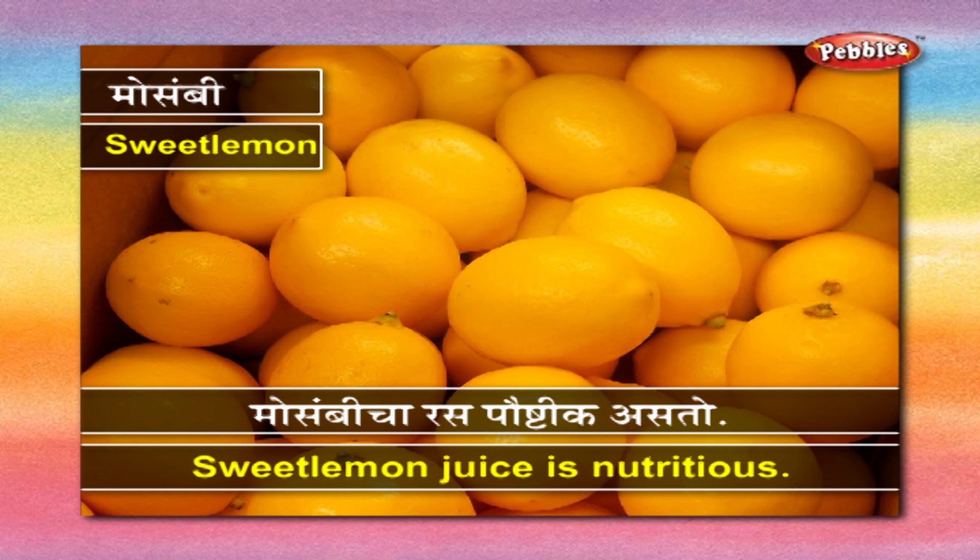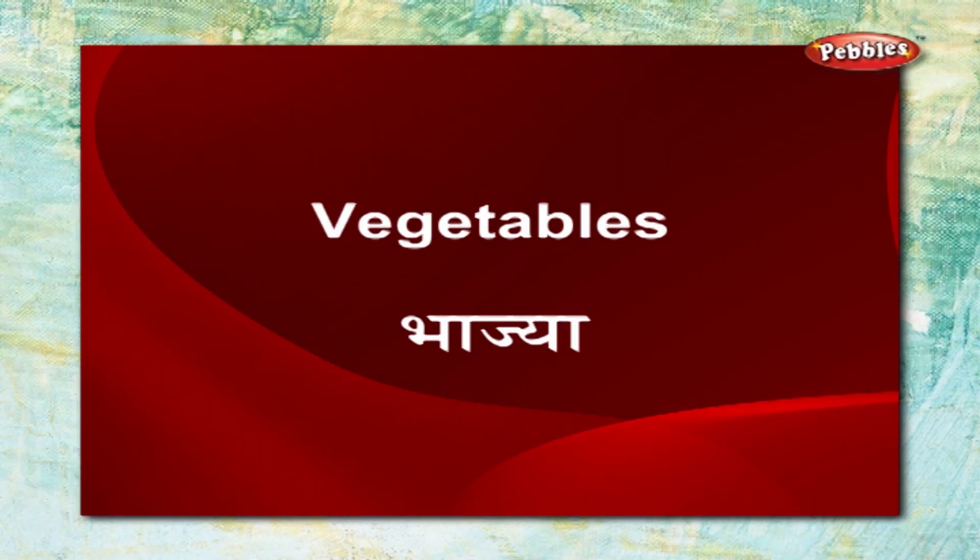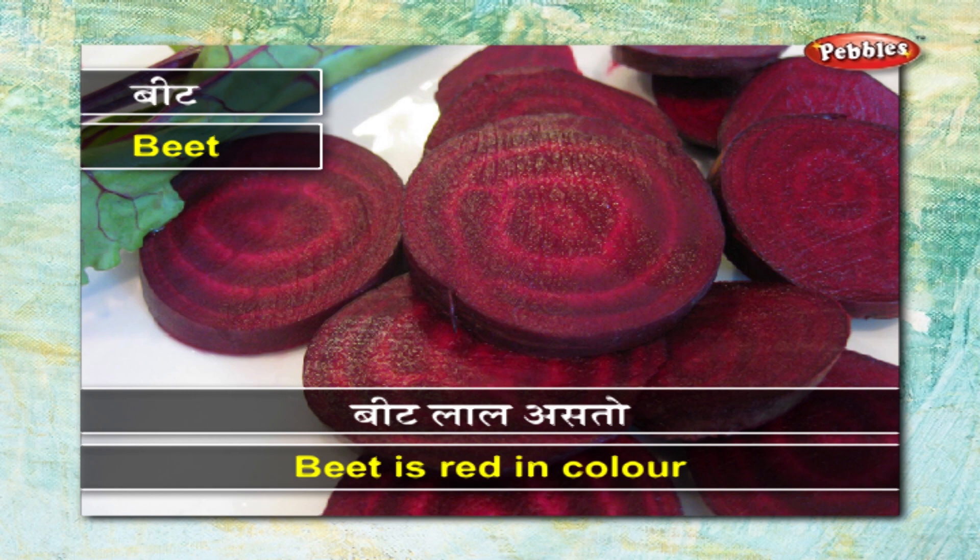मोसंबी - मोसंबी सारस पौष्टिक असते. Let us learn the names of some vegetables. भाज्या - बीट - बीट लाल असतो.